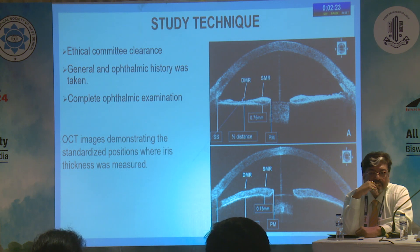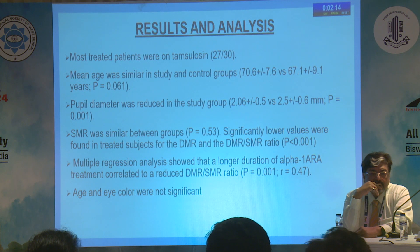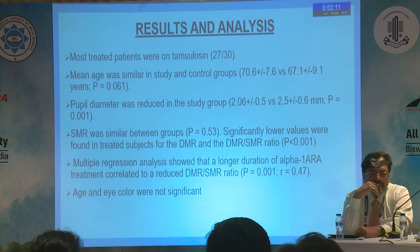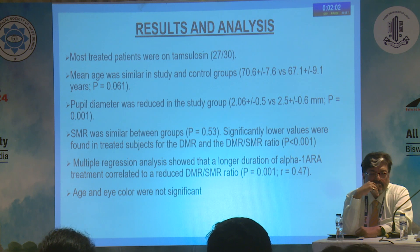These are the dilator muscle radii and the smooth muscle radii, along with the scleral spur and the pupillary margin. Regarding results and analysis: 27 out of 30 patients were treated with Tamsulosin. The mean age was generally similar in the study and control groups. The pupillary diameter was reduced in the study group, the SMR was similar between the groups, and age and eye color were not significant.